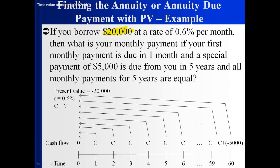In the second example, you're borrowing $20,000 at six-tenths of a percent per month. You want to know what your monthly payment is. The first payment is due in a month. A special payment of $5,000 is also due from you in five years, and all monthly payments for five years are equal. So five times 12 equals 60 payments, the first due in one month, all the way out to the 60th in 60 months. The present value of all these negative cash flows is negative $20,000.